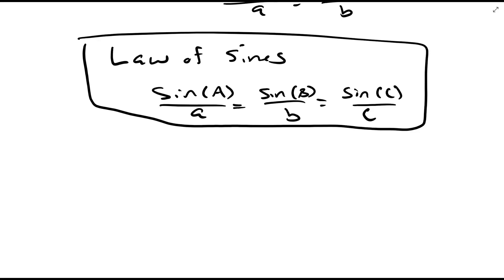In order to use this formula, I'm going to pick two of these ratios and set them equal to each other. Because all three ratios are equal, I can pick whichever two I want — like sine A over a equals sine C over c, or sine B over b equals sine A over a — whatever pair I need for my specific problem.